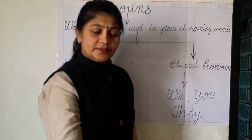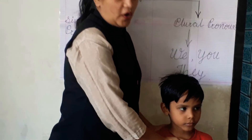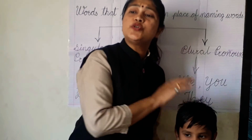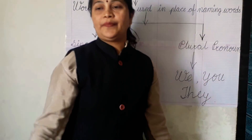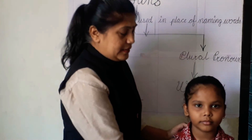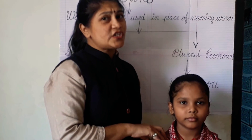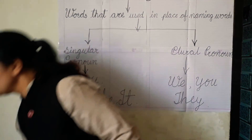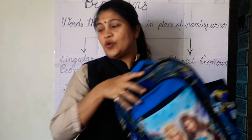Little boy, Kutkarsh. This is a little boy — Kutkarsh. Which pronoun we use for the boy? He. Very good. Come. This is Trisha. Which pronoun we use for Trisha? She. Very nice. What is this? This is a bag. Which pronoun we use for the bag? It. Very good.